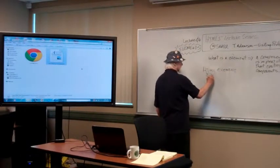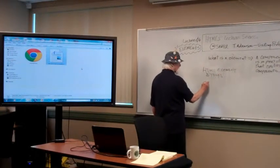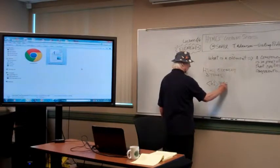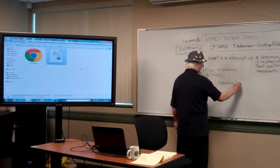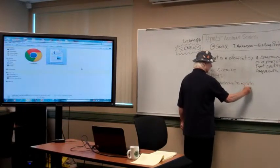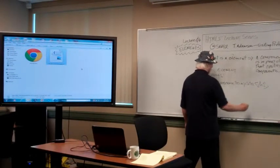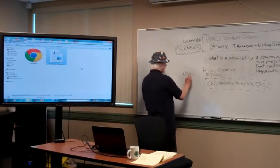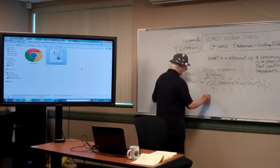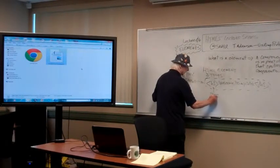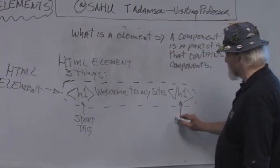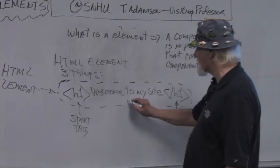All elements have three things, and one of the things is optional. They have what we call a start tag, they all have what is called an end tag, and they may or may not have content.